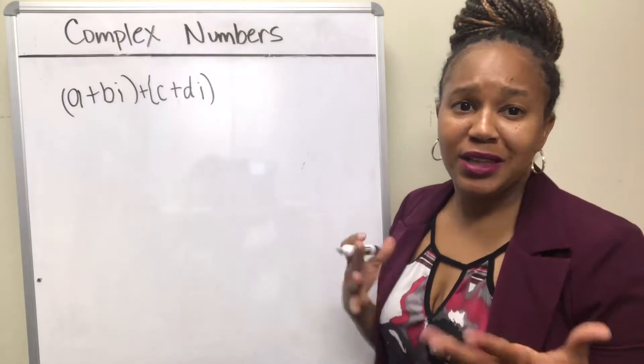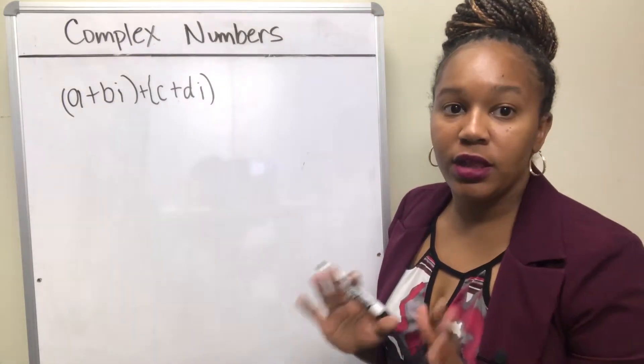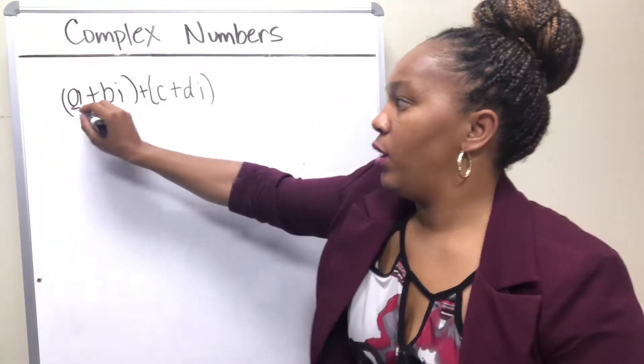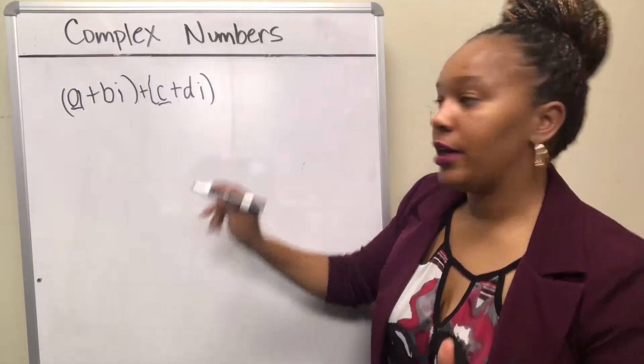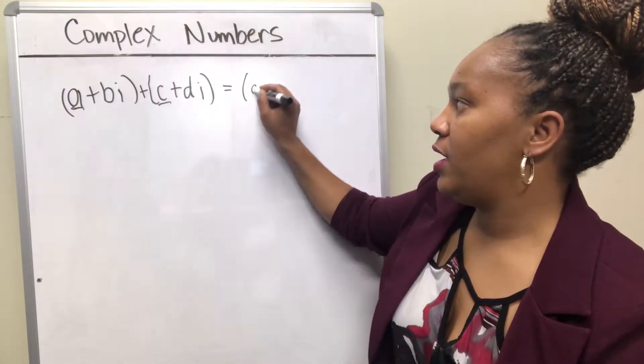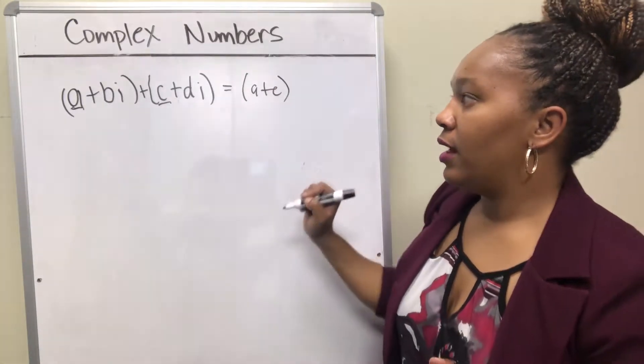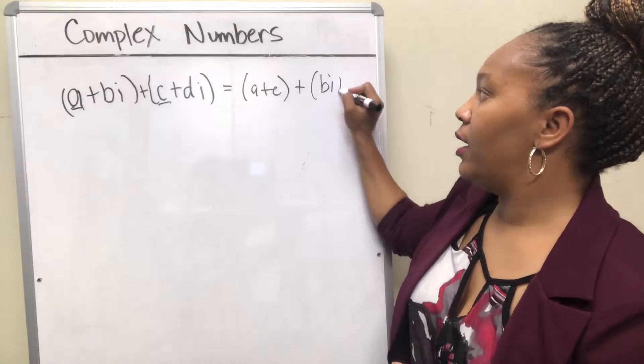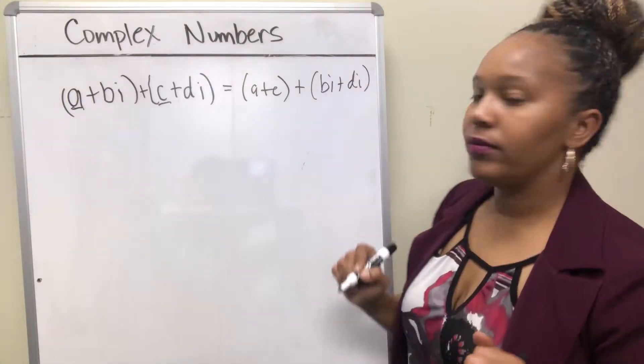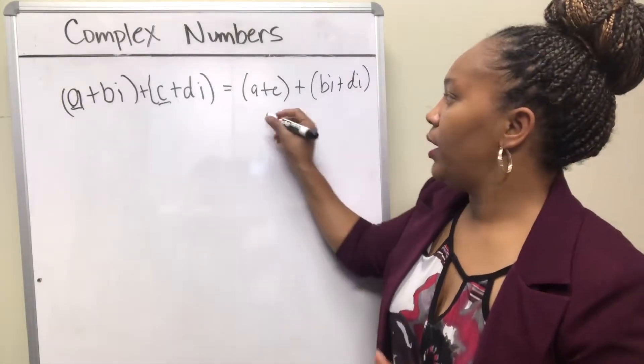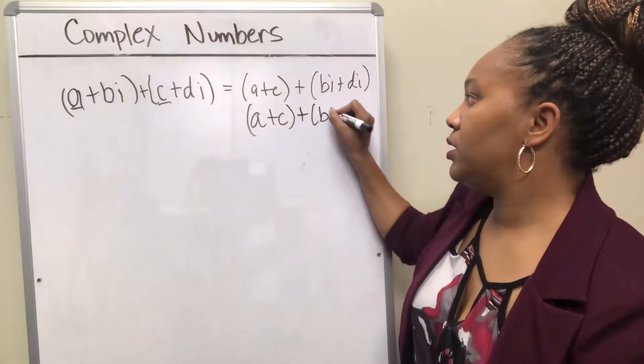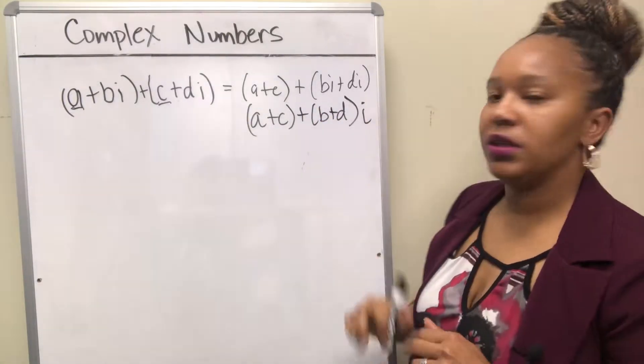If you want to add them, it's basically just like combining like terms. You add the real parts together and you add the imaginary parts together. The real parts are the ones that are not attached to the i, so you'll add the A and C together. Then you'll also add the imaginary parts together, which is the Bi and the Di. This part actually ends up separating into B plus D because you can pull the i out: B plus Di.